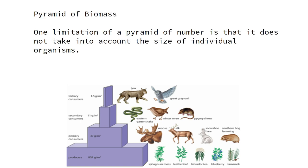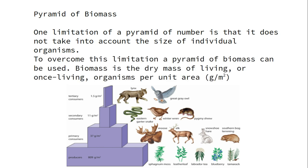A pyramid of biomass is also something we're going to look at. It essentially takes into account the pyramid of numbers but, rather than just numbers based on population, it also looks at the size of the individual. You're going to have bigger animals at the top of the biomass pyramid. It takes into account the actual size of the individual organism, looking at the overall dry mass and once-living mass of organisms per unit area.